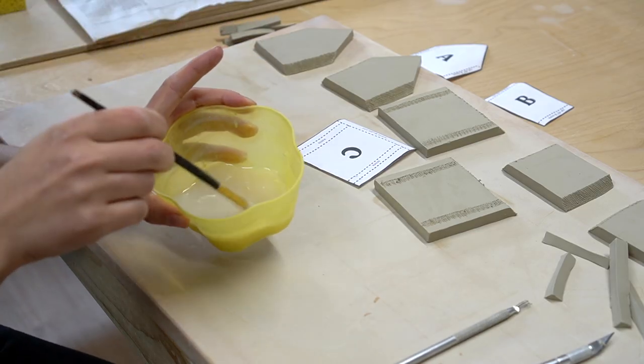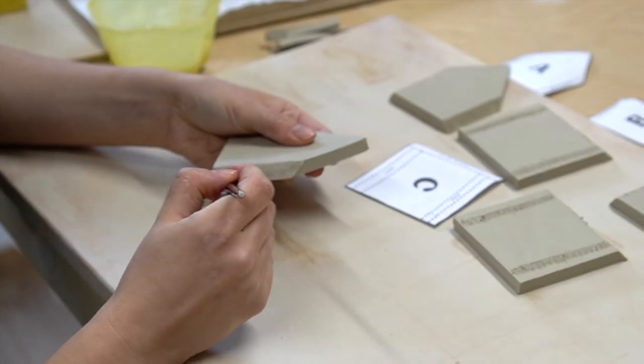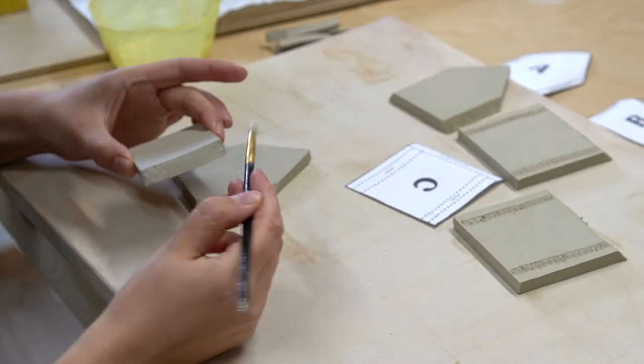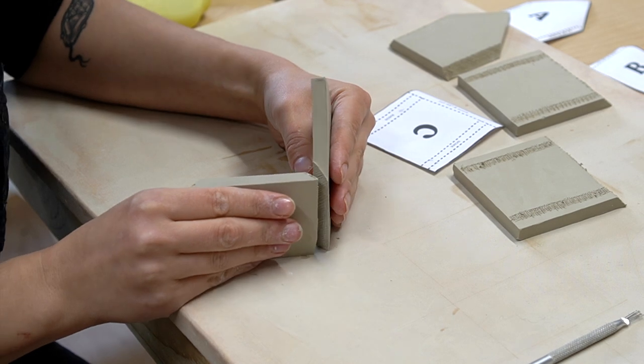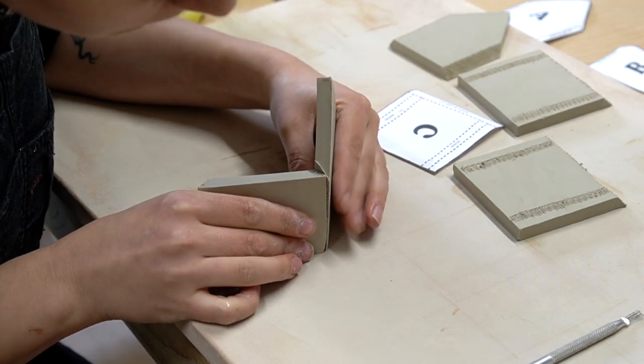Now that our pieces are prepared it's time to start assembling. You want to assemble the body first before the roof. I'm just using water here but depending on your clay you might want to use slip.